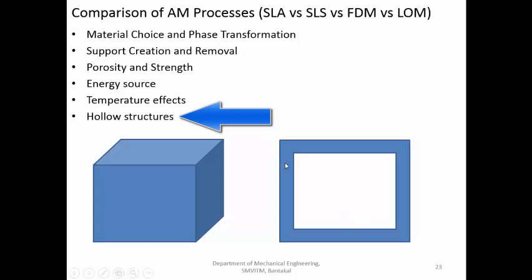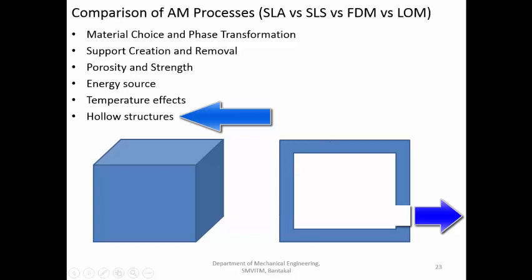The trapped air is hot because the surrounding material is hot, which is the main issue. Otherwise, FDM can produce perfectly hollow components. In LOM, the cross-hatched waste material inside is cut, but when the top layer is created, that waste material is enclosed. It is not possible to remove the material from the hollow portion without making holes in one of the sides of the component.